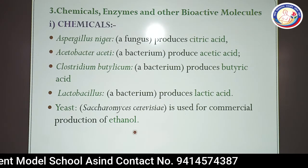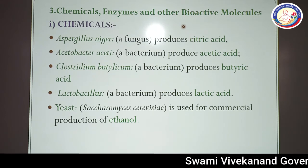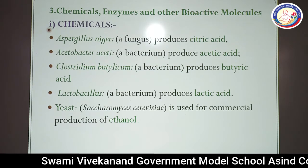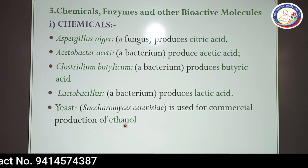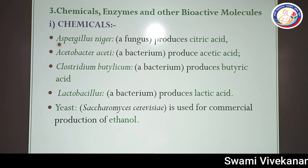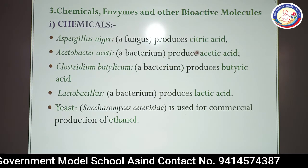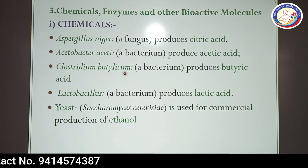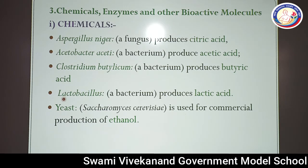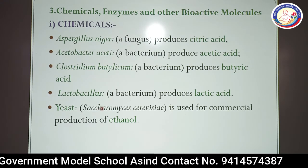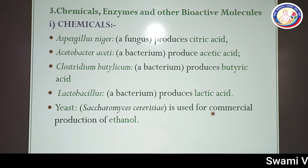The third use of microbes in industry is the formation of different types of chemicals, enzymes, and other bioactive molecules. Chemicals that can be prepared include: citric acid (by Aspergillus niger, a fungi), acetic acid (by Acetobacter aceti, a bacteria), butyric acid (by Clostridium butylicum, a bacteria), lactic acid (by Lactobacillus), and ethanol (by yeast Saccharomyces cerevisiae for commercial production).